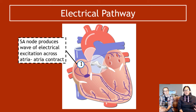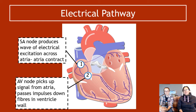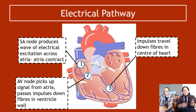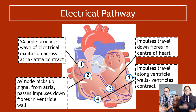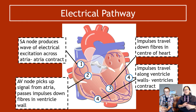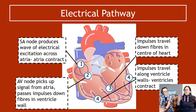The full electrical pathway: first, the SA node produces a wave of electrical excitation across the atria, causing atrial contraction. Second, the AV node picks up the signal and passes impulses down the fibers in the ventricle walls. These travel down the center of the heart and split up both sides of the ventricles, causing ventricular contraction. The order is atrial systole, then ventricular systole. Between these phases there is a period of no electrical activity — diastole — when both atria and ventricles relax.